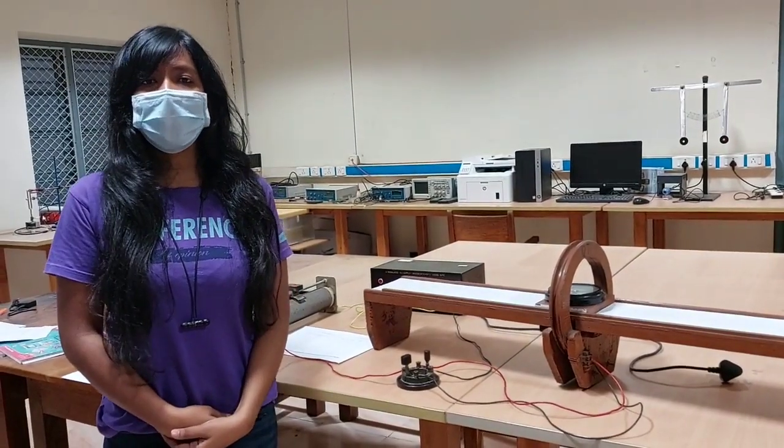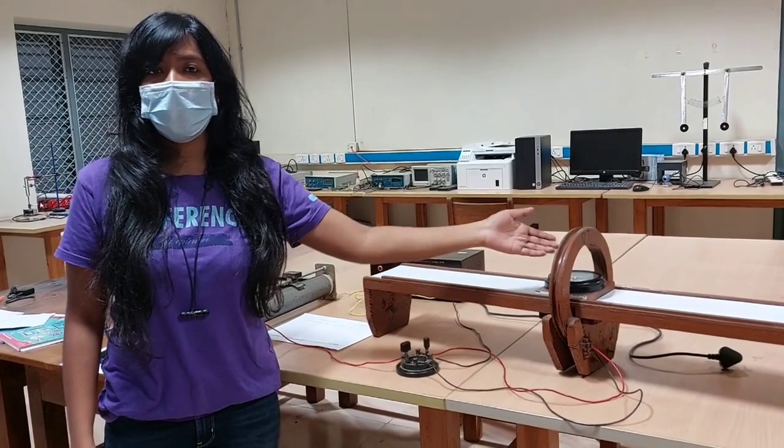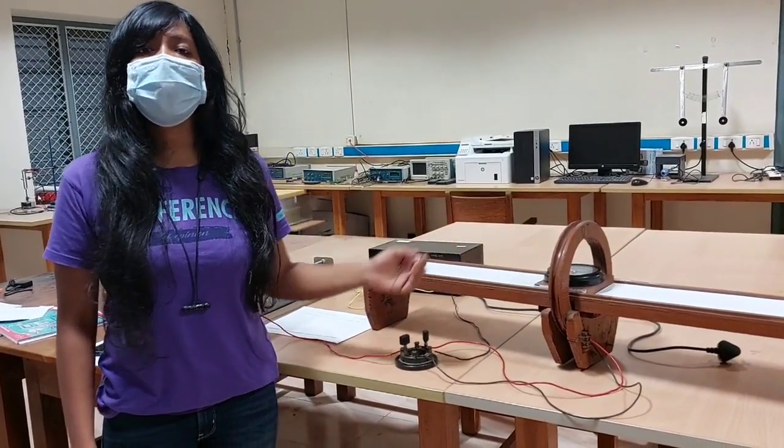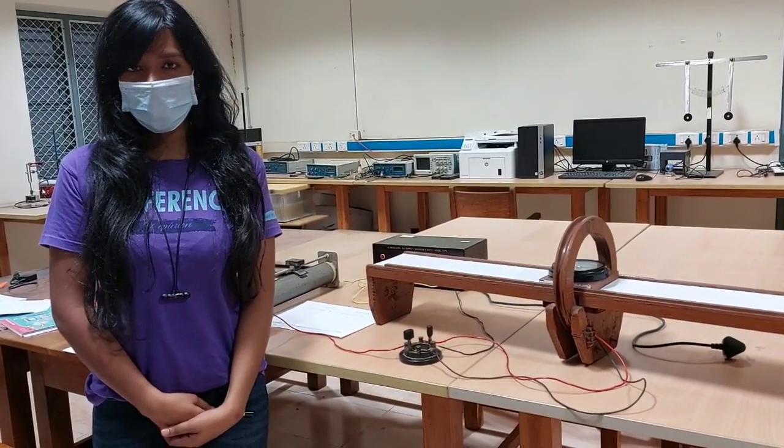Overall, we were able to determine the magnetic field along the axis of the circular coil and determine the horizontal component of Earth's magnetic field. Thank you.